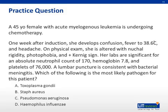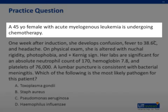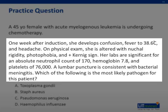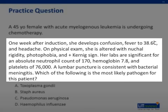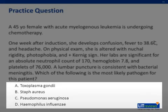Here is a practice board question. A 45-year-old female with acute myelogenous leukemia is undergoing chemotherapy. One week after induction, she develops confusion, a fever, and headache. On physical exam, she is altered with nuchal rigidity, photophobia, and a positive Kernig sign. Her labs are significant for an ANC of 170 — so she's certainly neutropenic — a hemoglobin of 7.8, and platelets of 76,000. A lumbar puncture is consistent with bacterial meningitis. Which of the following is the most likely pathogen? A) Toxoplasma, B) Staph aureus, C) Pseudomonas, or D) H. flu?